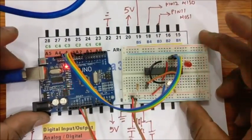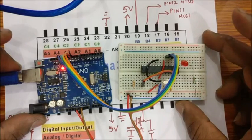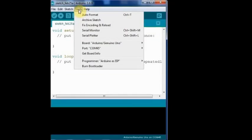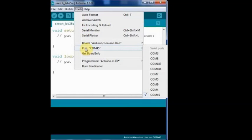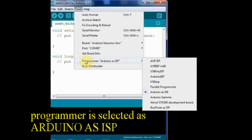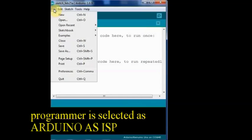Now the connection is complete. You can connect the USB of PC to UNO. Open the Arduino IDE and under tools select board as Arduino UNO. Port number is the one allotted to UNO master and programmer is selected as Arduino as ISP.